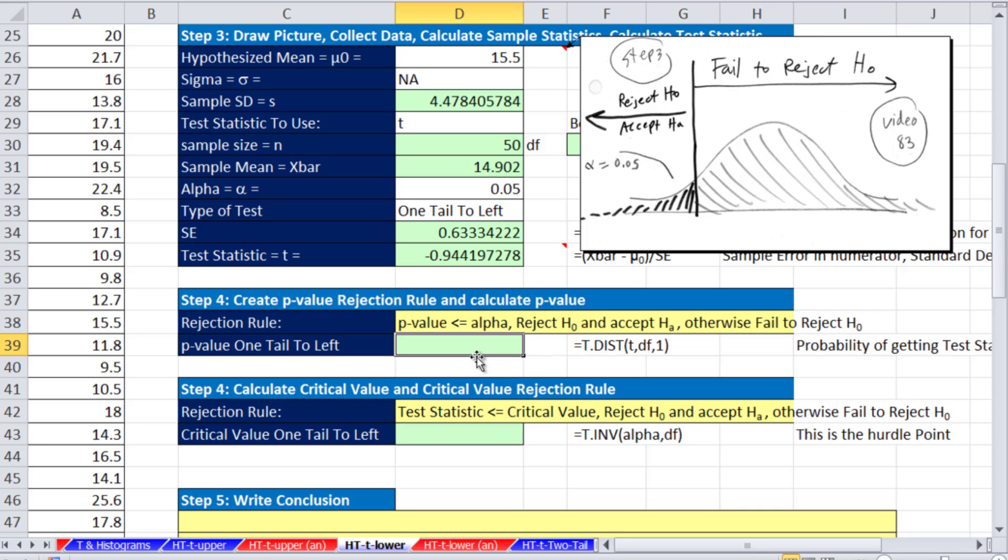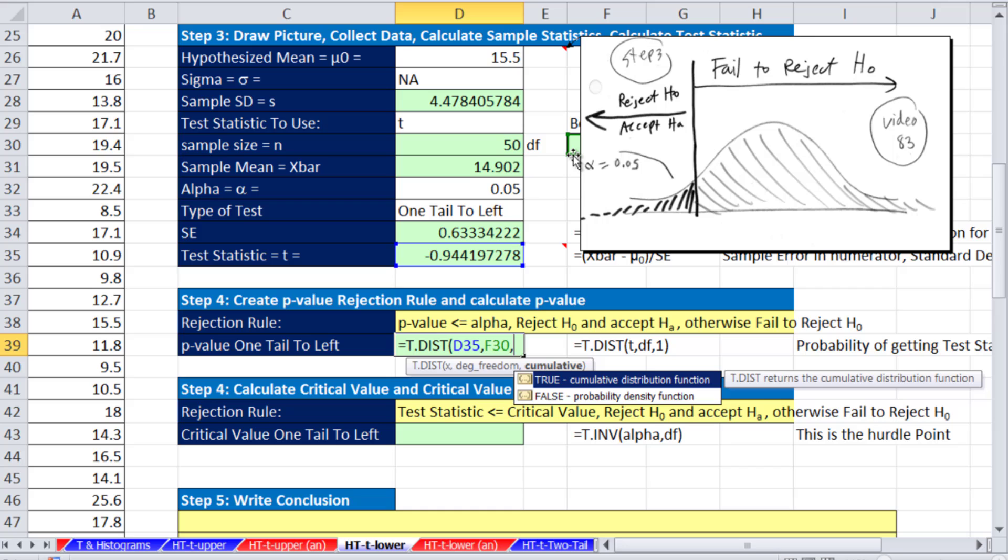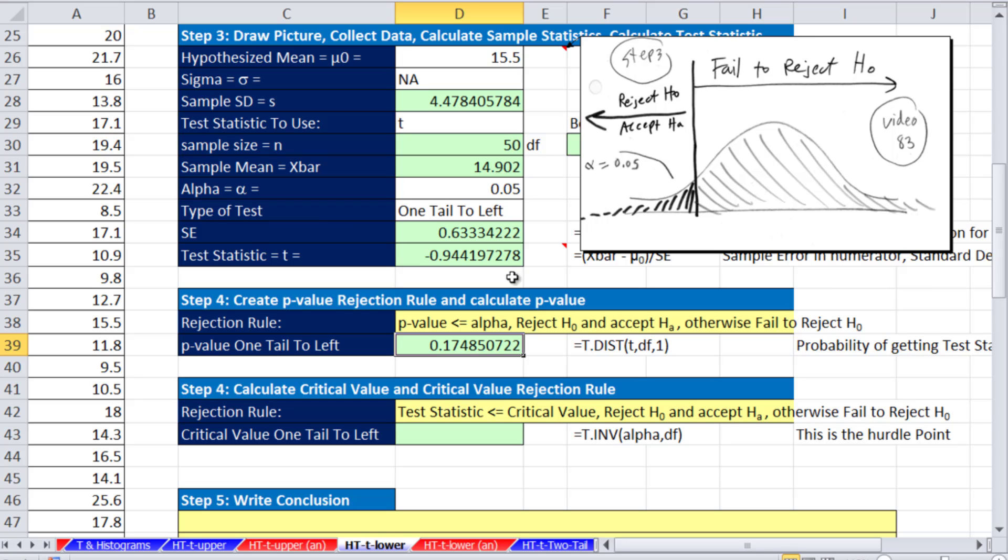Either the p-value way, then we directly compare it to our alpha, or the critical value method where we calculate our critical value and compare it directly to the test statistic. So alpha, when we're doing the lower end, it's easy. We just use our dist, so equals T dot dist, our test statistic, our degrees of freedom, and this is cumulative one. So we're going from negative infinity up to this Z here, and it will tell us what the probability is. And so 0.17, we compare that directly to our alpha. Clearly, we're going to fail to reject. It looks like the method is not faster.